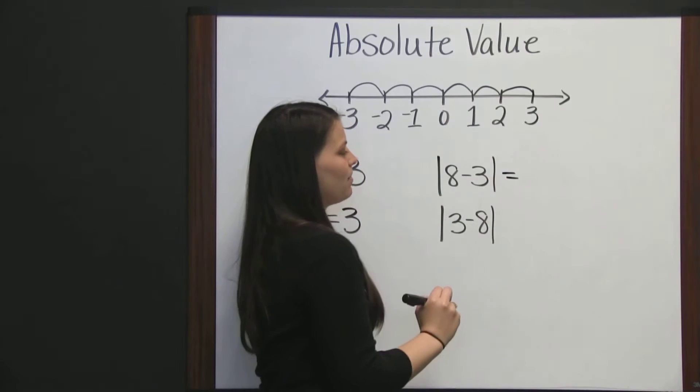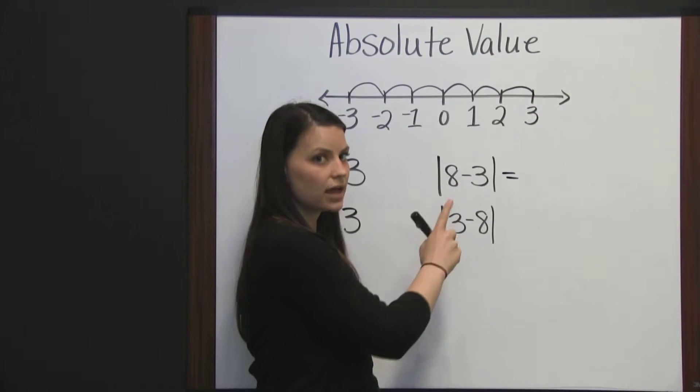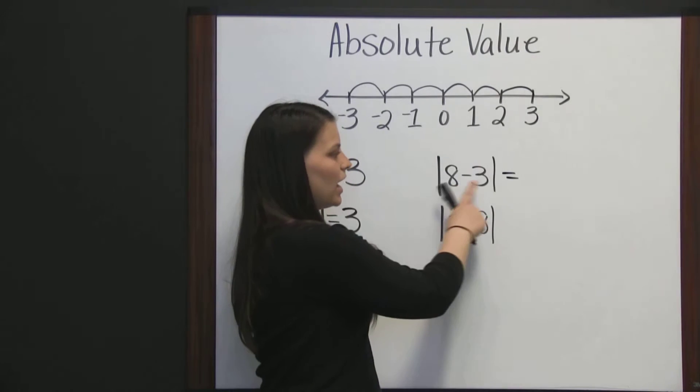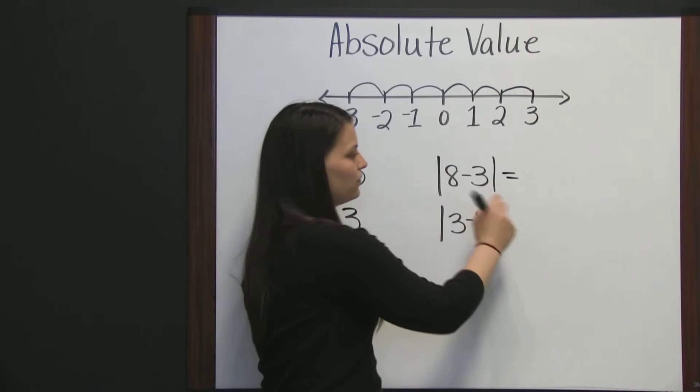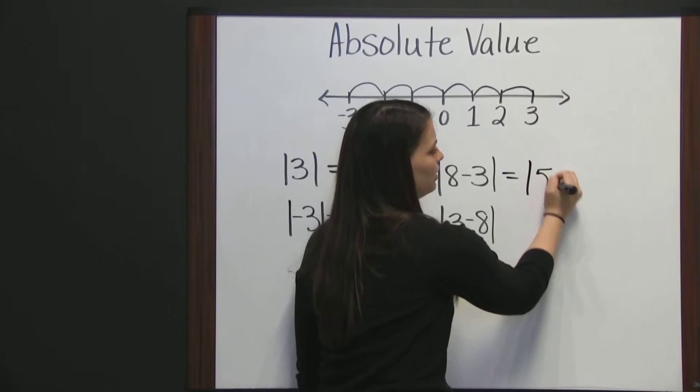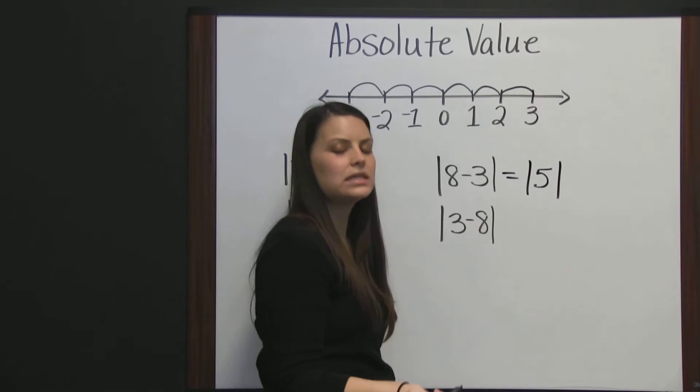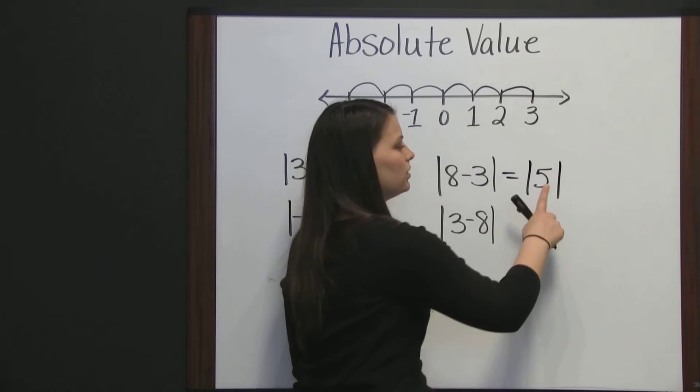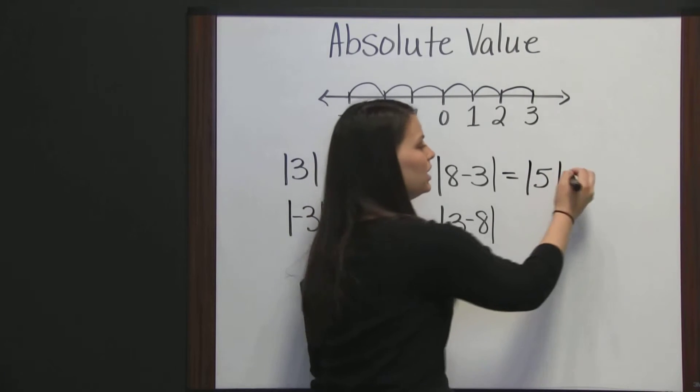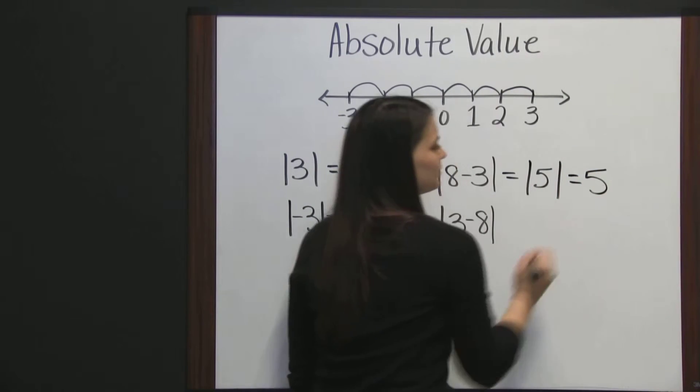Start on the inside finding your difference. Eight minus three is five. So, we have the absolute value of five, which is five. And again, absolute value is the distance from zero. Five is five places from zero.